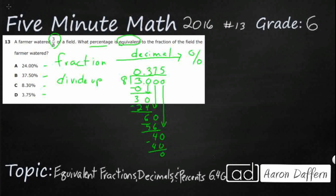So 3/8 equals 0.375, or 375 thousandths.